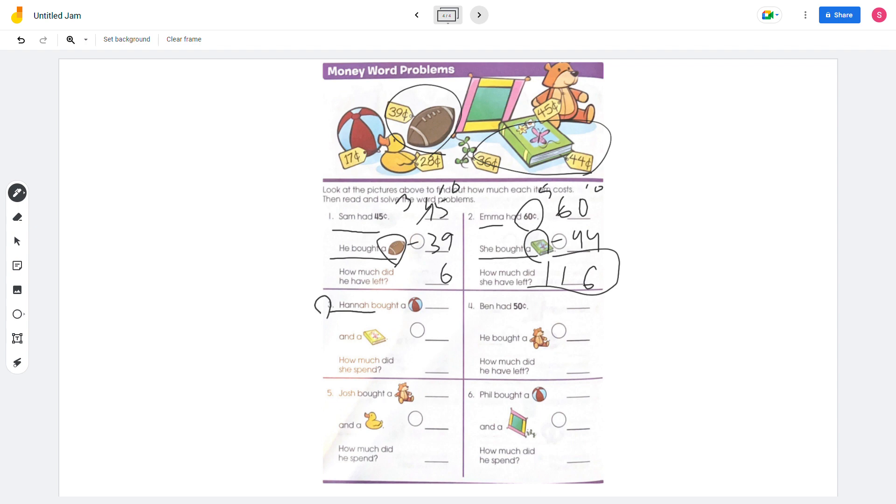On number 3, Hannah bought a ball and a book. Ball costs 17 and book costs 44. 17 plus 44 equals 61, so 61 cents.